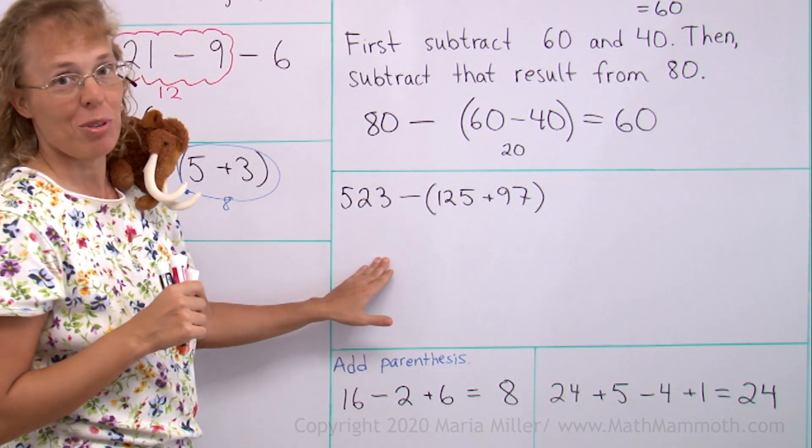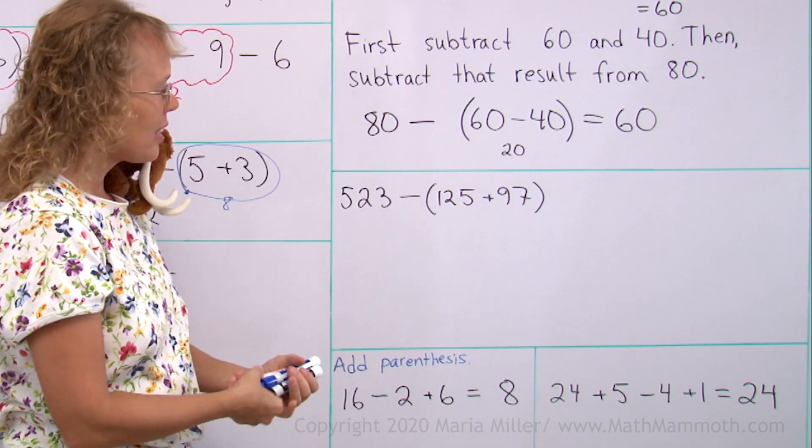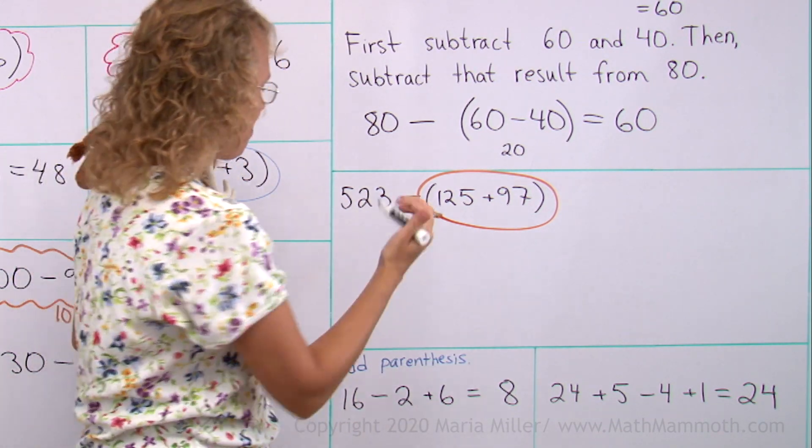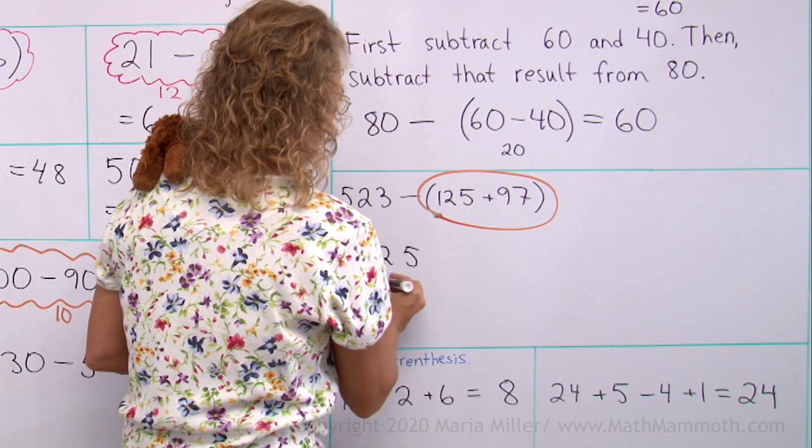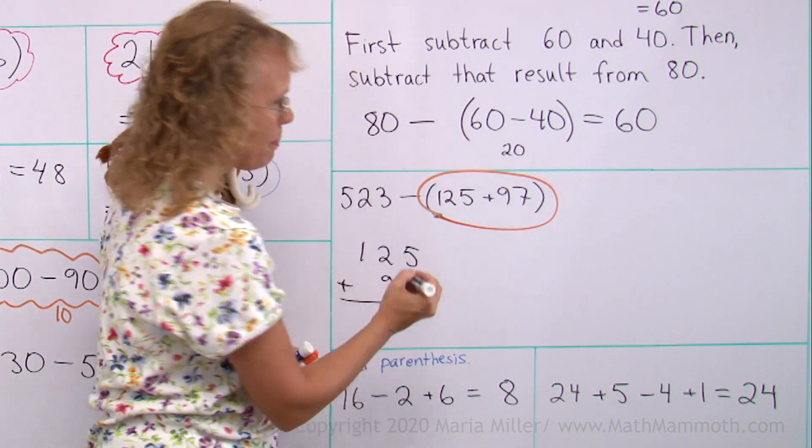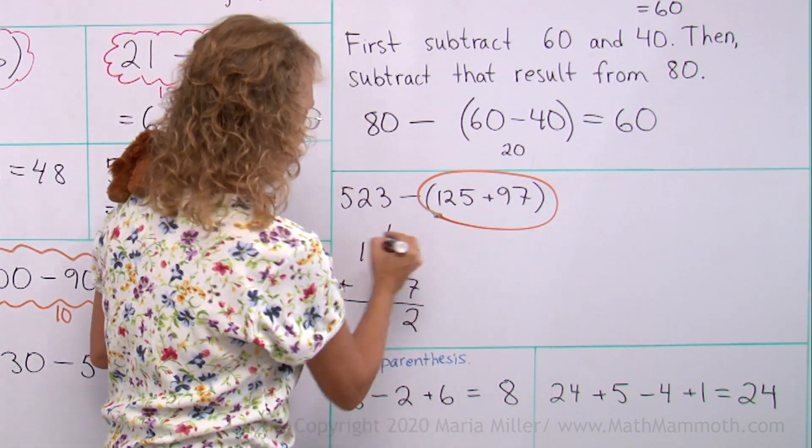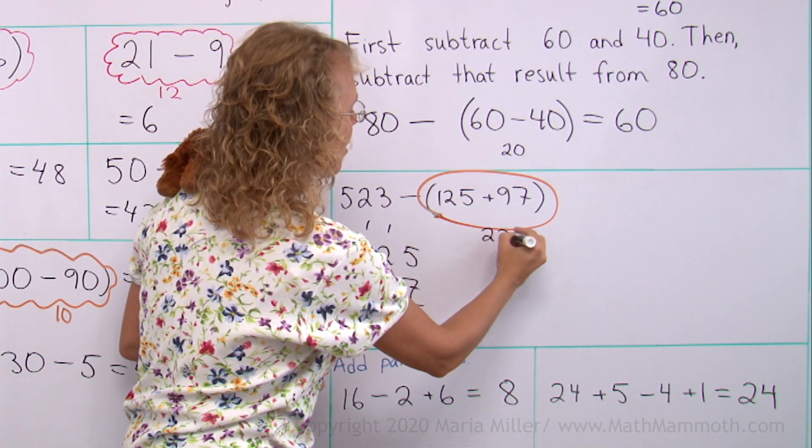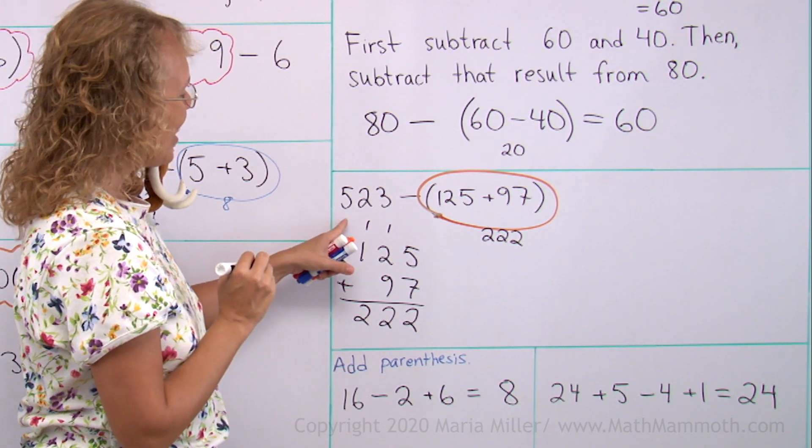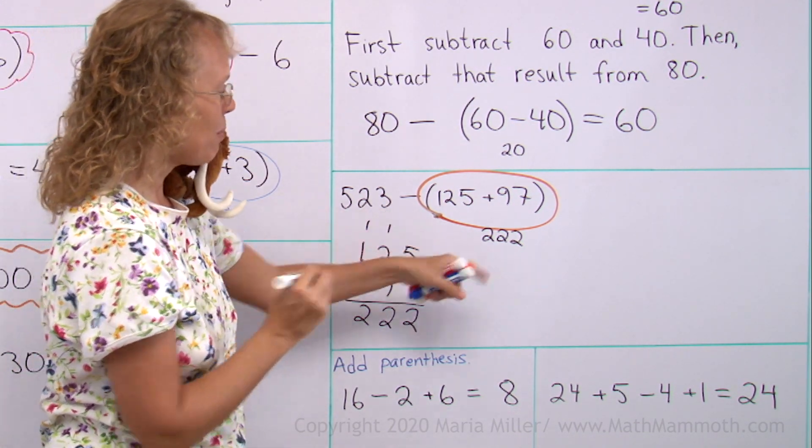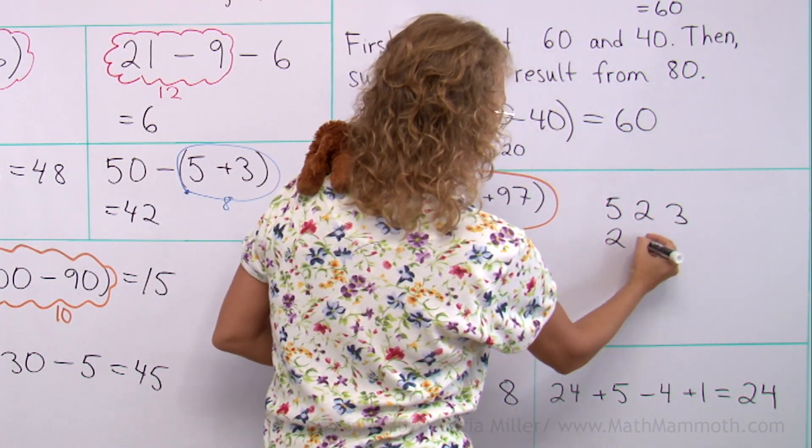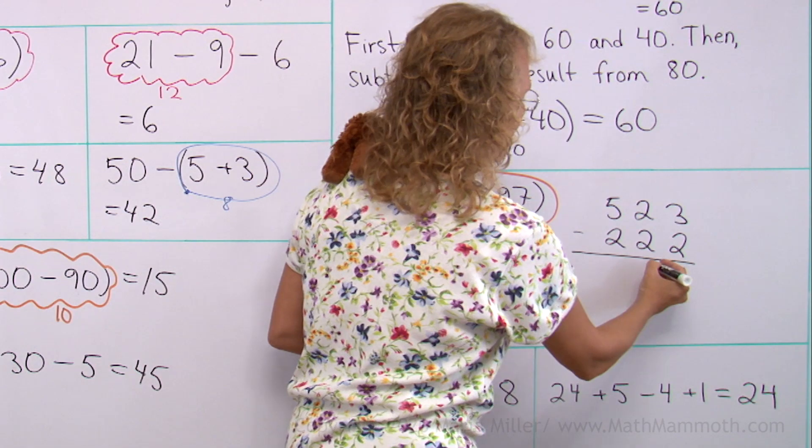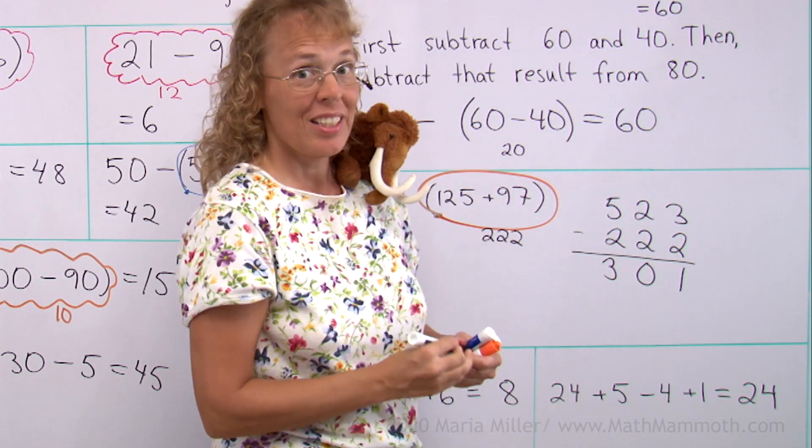Over here, the idea is the same, but the numbers are more difficult. We need to first solve what is inside parentheses. This thing here, so let's add. This time, I'm going to write my numbers under each other. Five plus seven. You tell me. You add quicker. Can you add quicker than what I do? Yes, 12 too. 222. So this bubble here is 222. And now, you see, what we need to do last is subtract. Again, I could write my numbers under each other. Though, I could do this mentally too because the numbers look kind of easy. Three minus two. Then here, zero. And here, three. So the whole answer is 301.